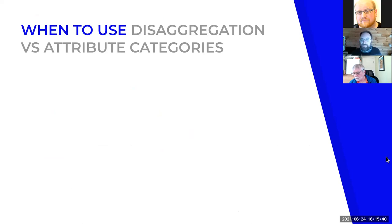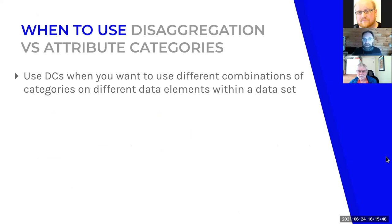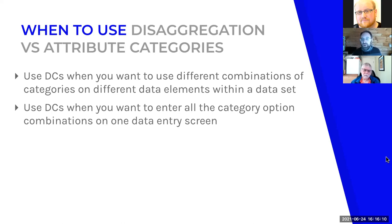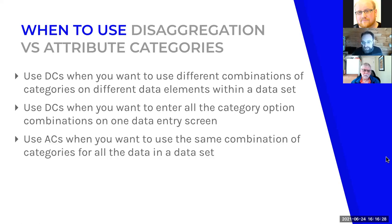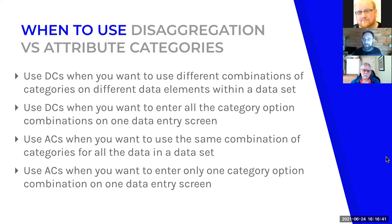When do you use disaggregation categories versus attribute categories? Use disaggregation categories when you want different combinations of categories on different data elements within a data set, and when you want to enter all of the category option combinations on one data entry screen — seeing the whole cross-product of all possible combinations at once. Use attribute categories in the opposite situation: when you want the same combination of categories for all data in the data set, selecting it at the beginning, and seeing one screen per category option combination.